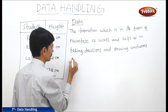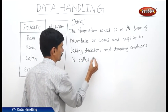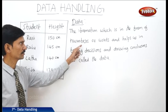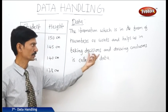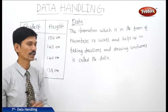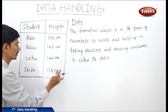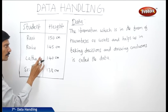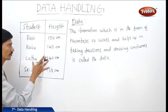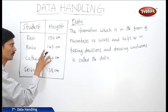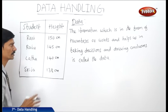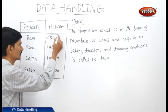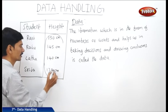The information which is in the form of numbers or words and helps us in taking decisions and drawing conclusions is called the data. In this data, this is the information regarding the heights of the students. From this information we can take some decisions and draw some conclusions. This information in the form of a table and in the form of numbers or words is called the data.